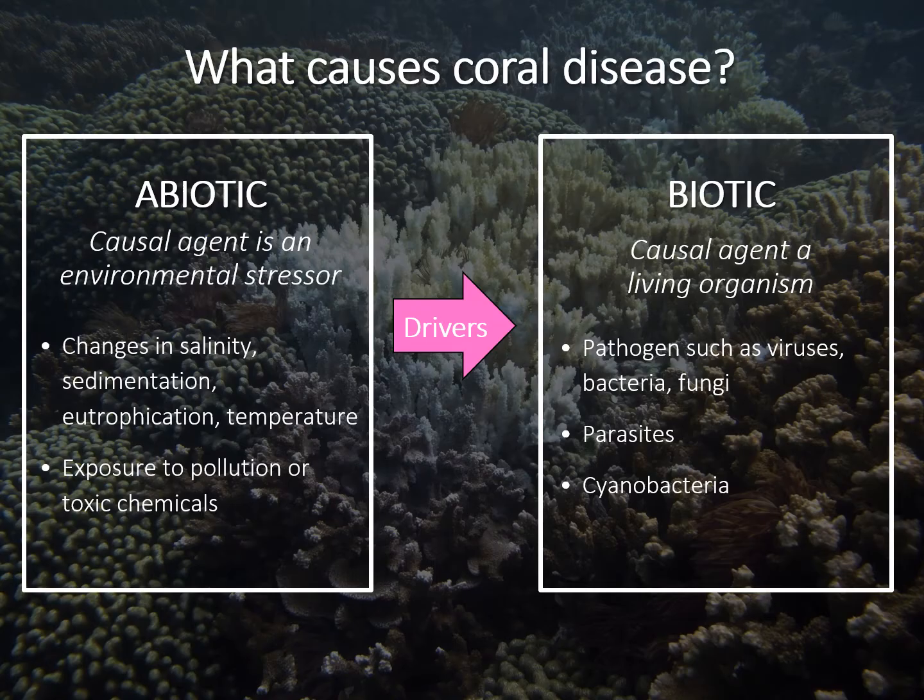There are many factors that can cause disease in corals. Environmental stressors that can cause coral disease are known as abiotic or non-living factors. These drivers can include changes in seawater salinity, sedimentation events from local watersheds or dredging activities, eutrophication or increased nutrient inputs, or rapid changes in seawater temperatures. Coral disease can also be caused by exposure to certain pollutants or toxic chemicals. In some more highly degraded areas, corals may experience multiple abiotic stressors concurrently. The presence of these environmental stressors can also lower a coral's immunity, allowing a disease-causing pathogen to overcome the coral's immune defenses.